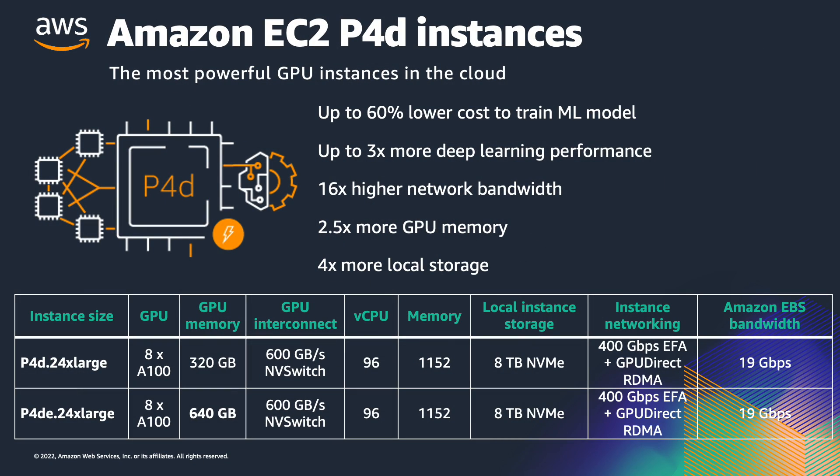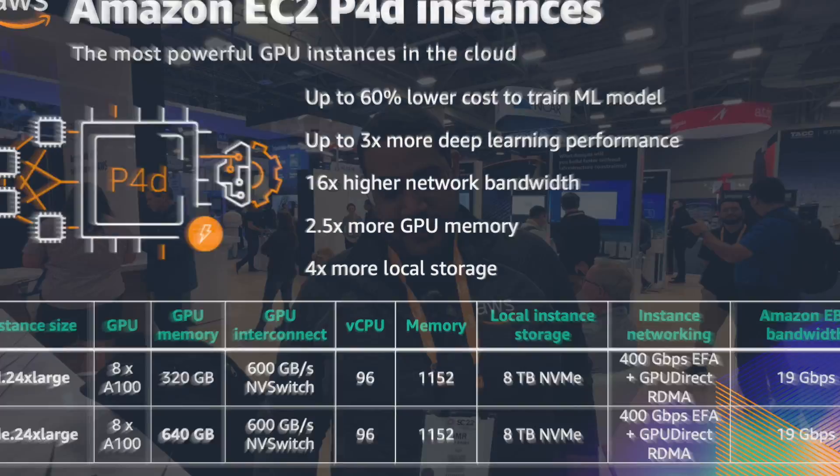These are big boxes. You've got a bunch of fast Intel CPUs and an awful lot of GPU boards in there, and then an awful lot of network bandwidth coming out the back — 400 gigabits. That's four 100-gigabit trails, and EFA spreads over all of those.